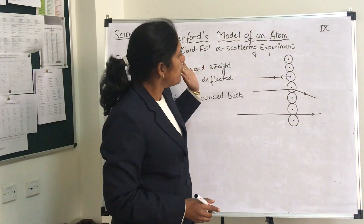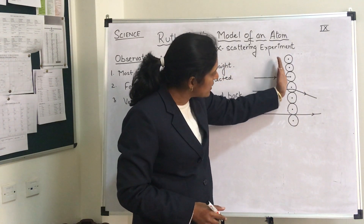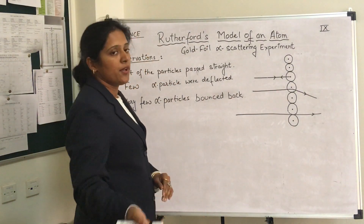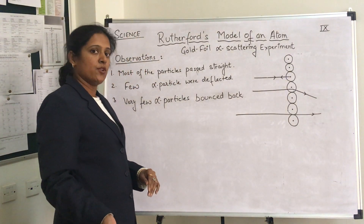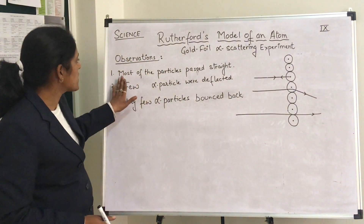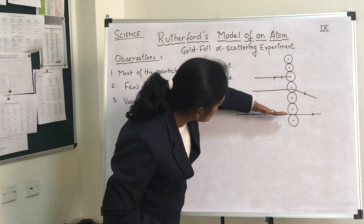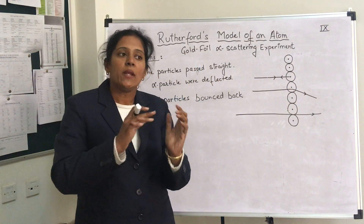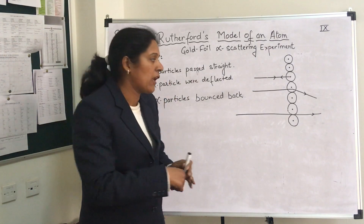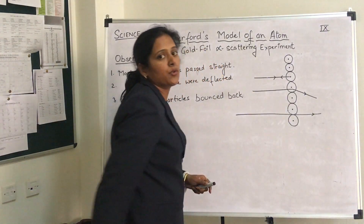He bombarded a beam of alpha particles on the gold foil and there were three major observations made by Rutherford. The first observation was that most of the alpha particles passed straight through the foil.